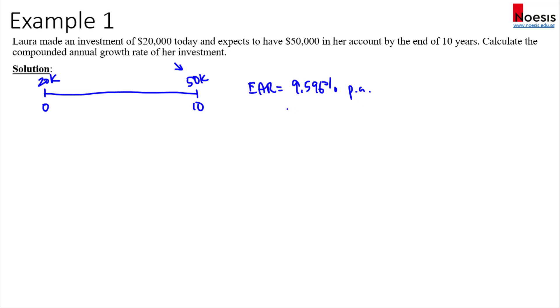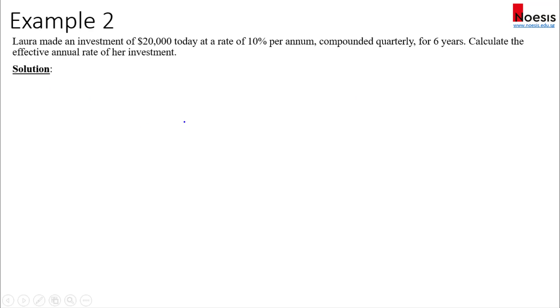Some people do call this as CAGR as well, which is the compounded annual growth rate. Now let's look at another example. This time Laura made an investment of $20,000 today at a rate of 10% per annum and compounded quarterly for six years. Calculate the effective annual rate of her investment.